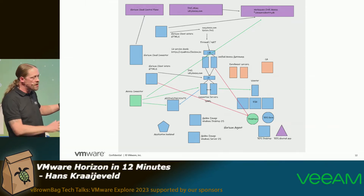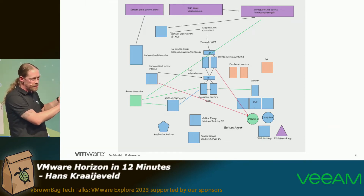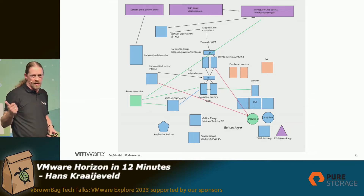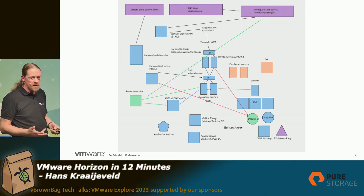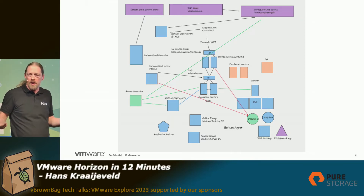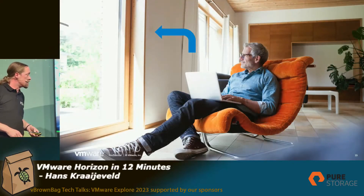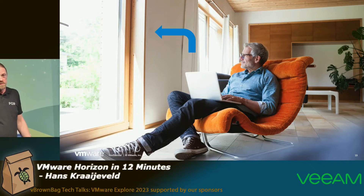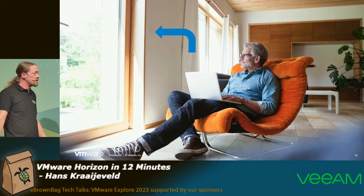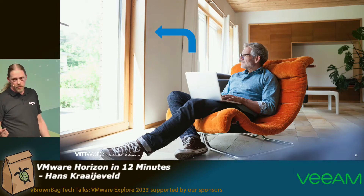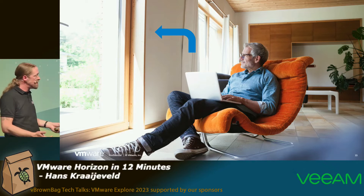There are actually just a few components and a few things that you need on the side, like Active Directory, like DNS, like NTP — all the things that should be working anyway. So what it actually looks like is this: you can just use your VDI desktop or application from anywhere you want and from any device you want.